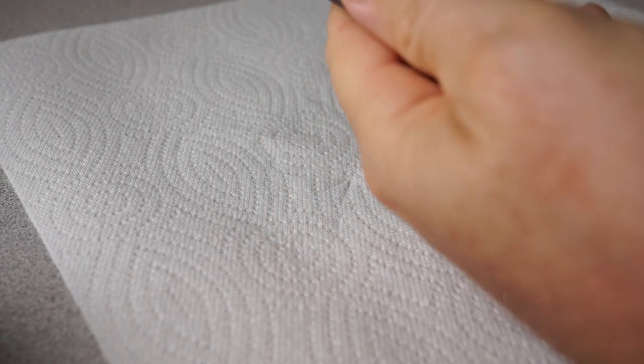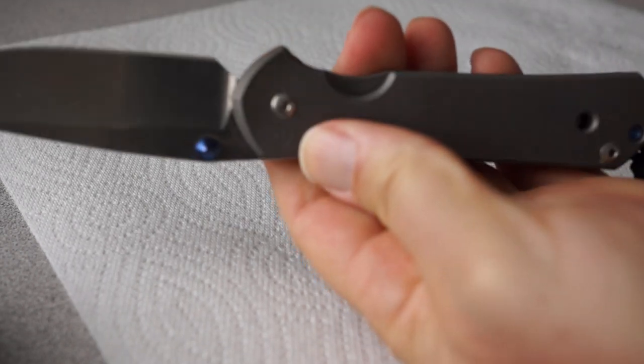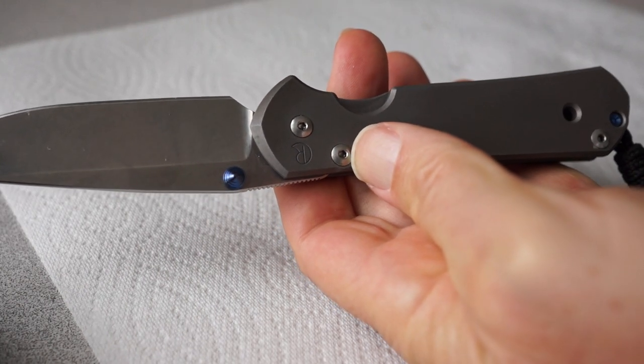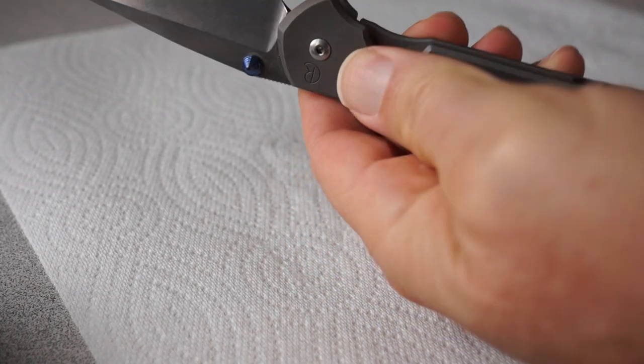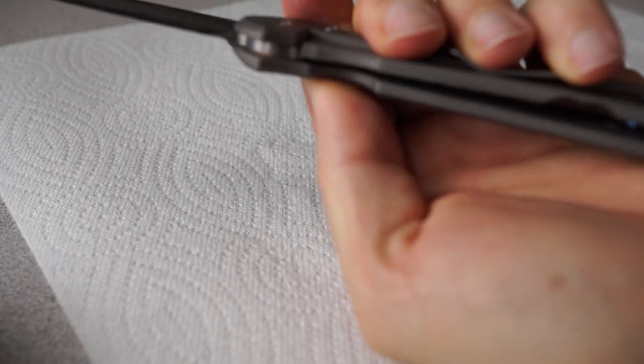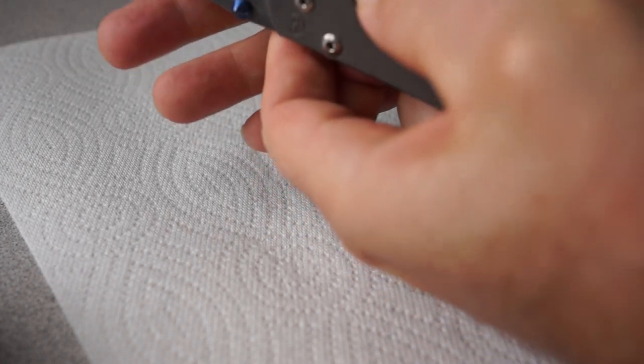For one thing, when I grip the knife with my left hand, and this is a left-handed Sebenza, it's out of the shot here. When I grip the knife with my left hand I'm actually pushing on the lock bar here which makes it difficult to push it open.